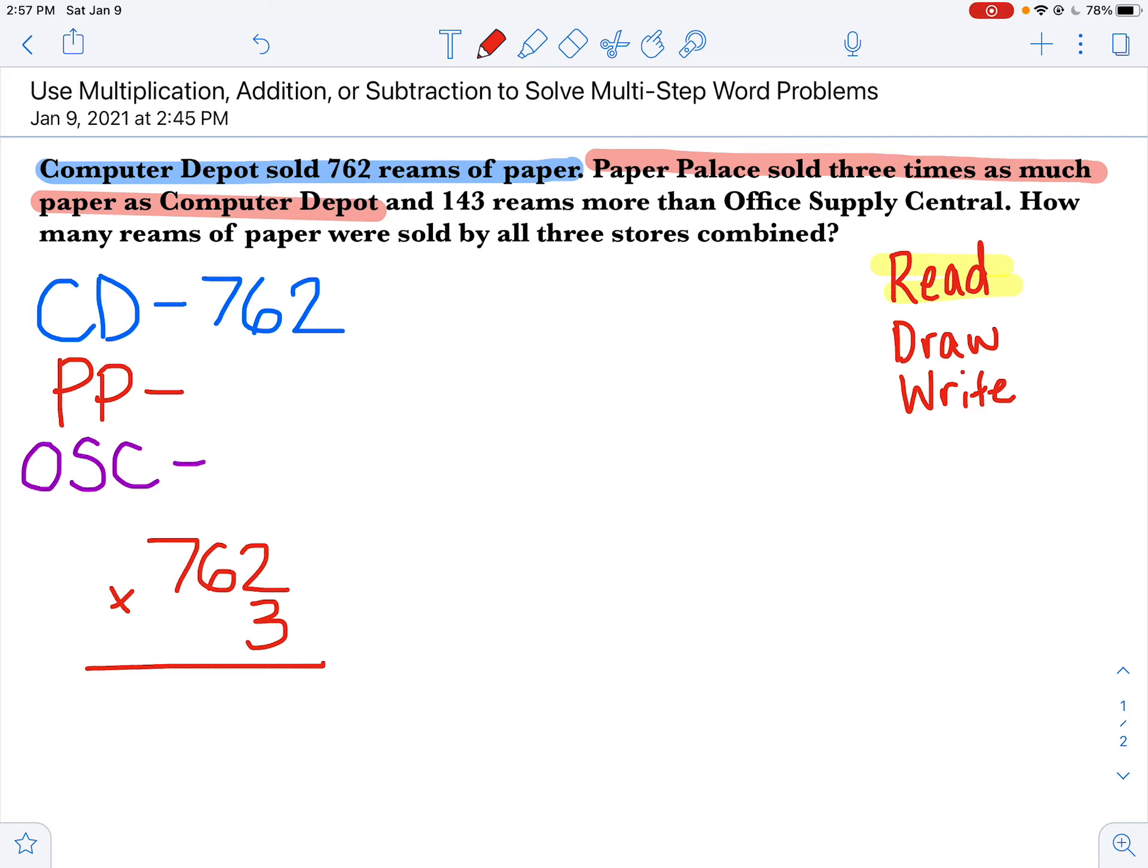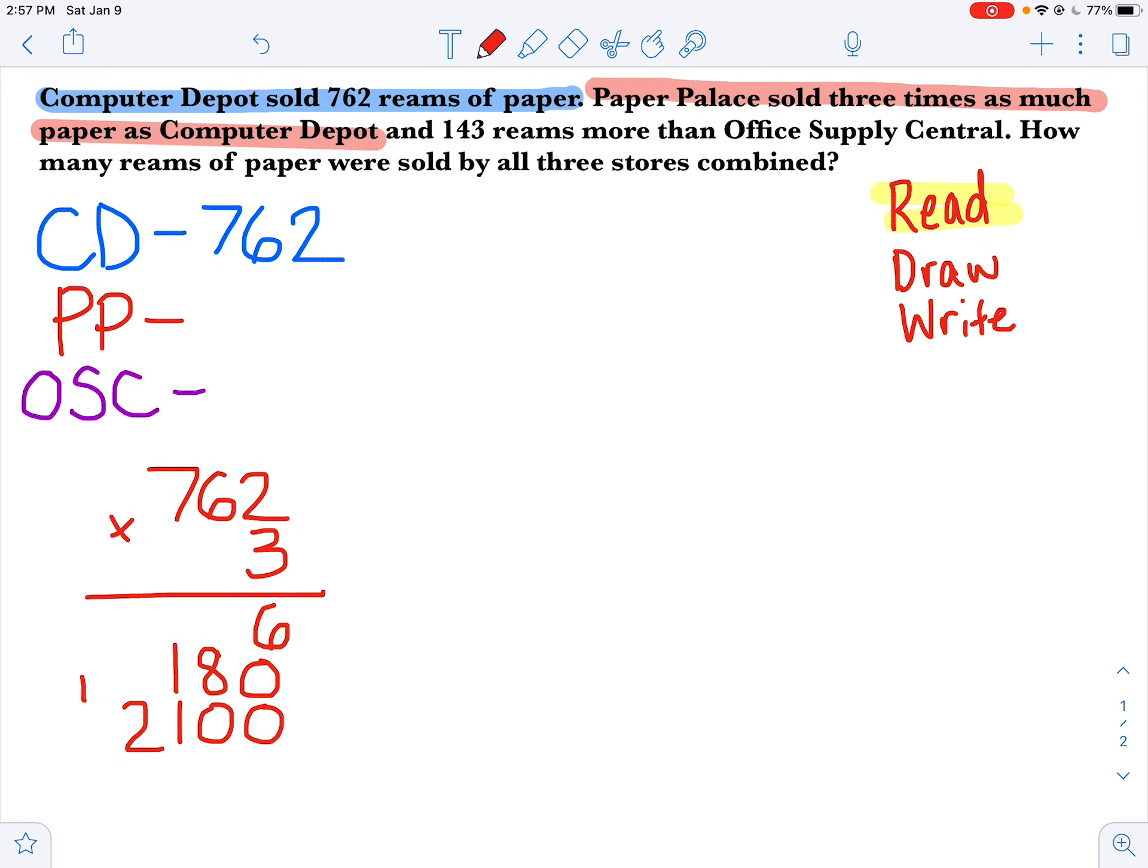All right. Well, Computer Depot sold 762 reams and Paper Palace sold three times as much. So I'm going to multiply that by three. Notice that I'm writing my multiplication problem way on the left of my paper. I'm not putting it smack in the middle. I'm trying to give myself as much space on my paper as possible, and I'm going to work top to bottom, left to right, instead of just writing equations all over the place. Okay, I'm going to use partial products here, and I'm going to go kind of quick with this because you guys should know how to do this part pretty quickly and easily at this point. Two times three is six. 60 times three is going to be 180, and 700 times three is going to be 2,100. So I'm going to list those here. I do have to scroll down just a little bit, and now I'm going to add all my products. Six and the zeros are six. Eight and the zero is eight. One and one is two and two. So I have figured out how many reams Paper Palace sold. It is 2,286. Boy, they sold a lot more than Computer Depot, didn't they?